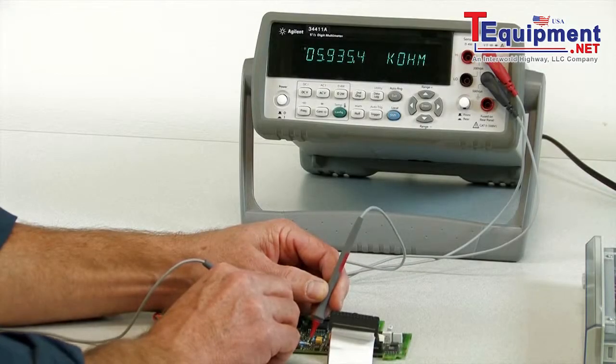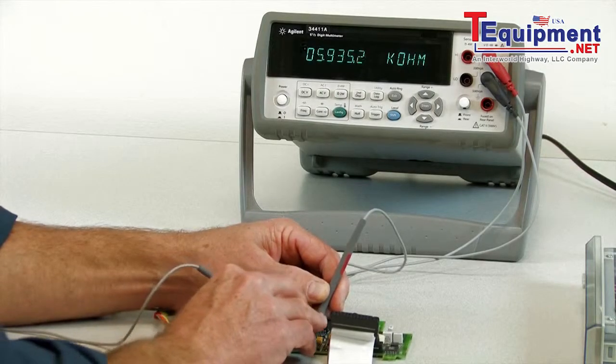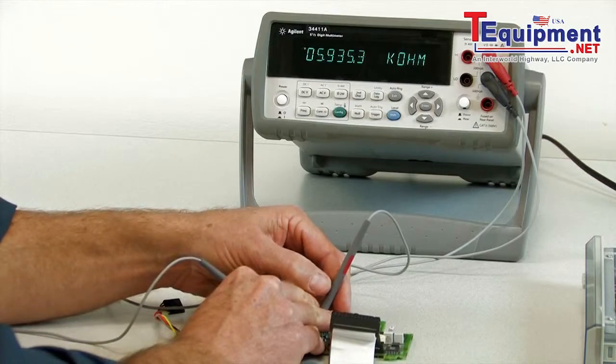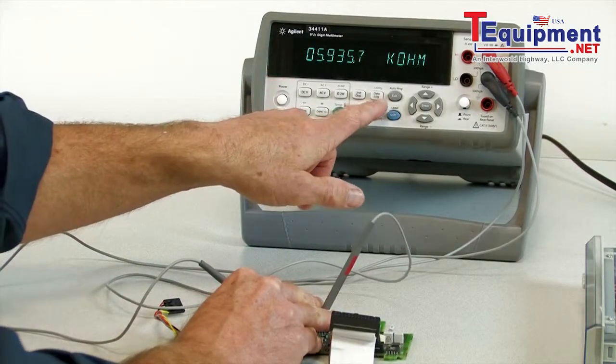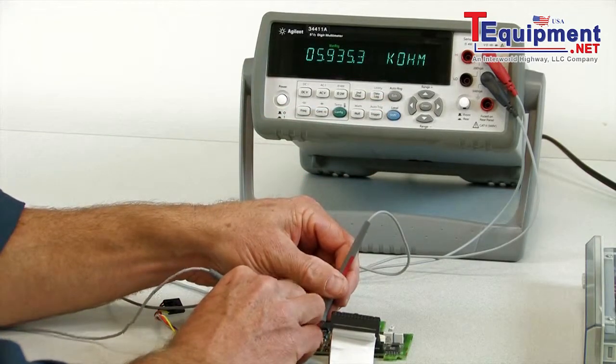Let's move on to resistance. This DMM will auto-range very quickly, but if you know you're going to be probing the same resistance or similar resistance, you can also put it into a manual range, and it'll just measure that much quicker.